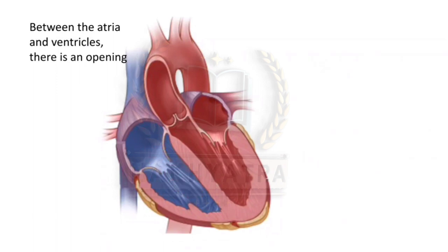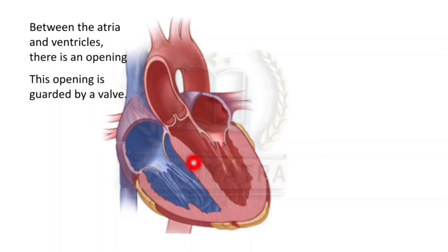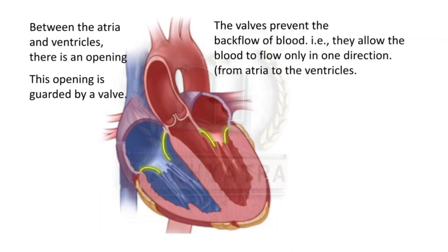Between the atria and the ventricles there is an opening, and this opening is guarded by a valve. The role of these valves is to prevent the backflow of blood — they allow blood to flow only in one direction, from the atria to the ventricles.